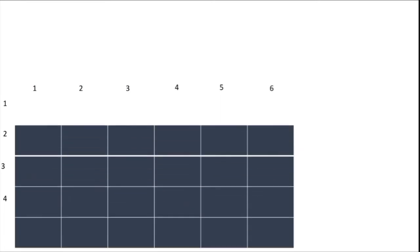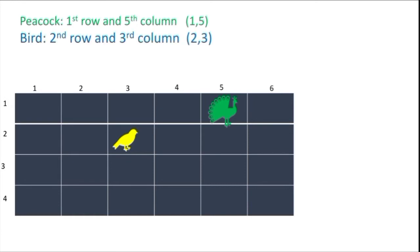You might have seen the ring games in exhibition. Here we will play a game arranged in rows and columns. Observe the following picture. Here is a peacock. See where is the peacock? First row and fifth column. The position of peacock is (1,5). Now the bird has come. The position of bird is second row and third column (2,3). Now one more picture is there, monkey. Third row and fourth column. The position of monkey is (3,4).